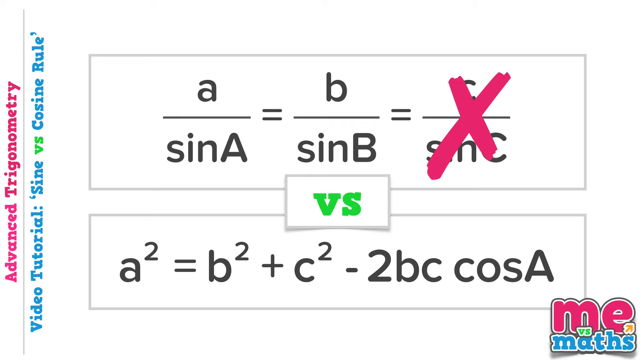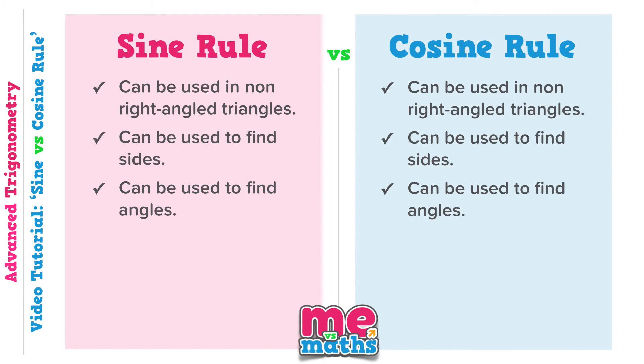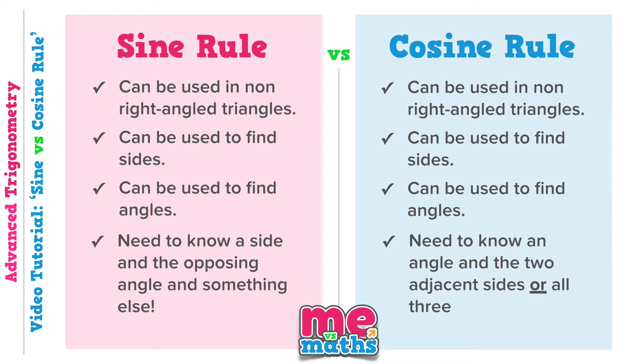Whereas in the cosine rule, we're using all three sides and only ever one angle. So if we're looking for the angle, we have to know all three other sides, or if we're looking for a side, we need to know both the other sides and the angle opposite. So the key difference is in the combination of sides and angles we're given, and this last bullet point is what we must focus on. To use the sine rule we need to know a side and the opposing angle and something else. For the cosine rule we need to know an angle and the two adjacent sides, or all three sides if we're trying to find an angle.